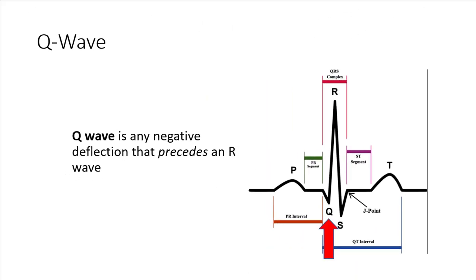The Q wave is the first negative deflection, going downward in what we call the QRS complex, which represents the ventricles firing. It is indicated by the Q and the small red arrow shown here.